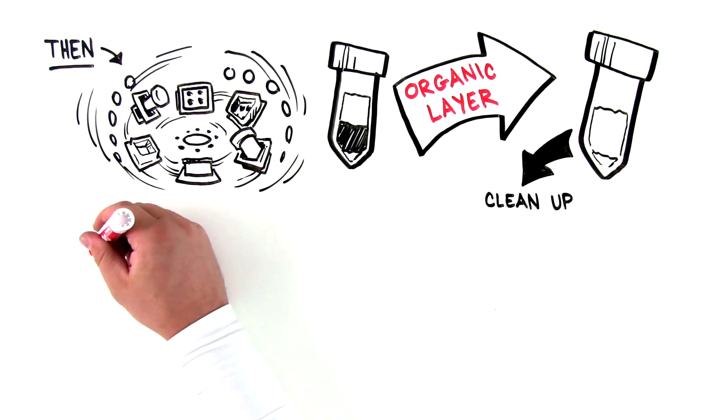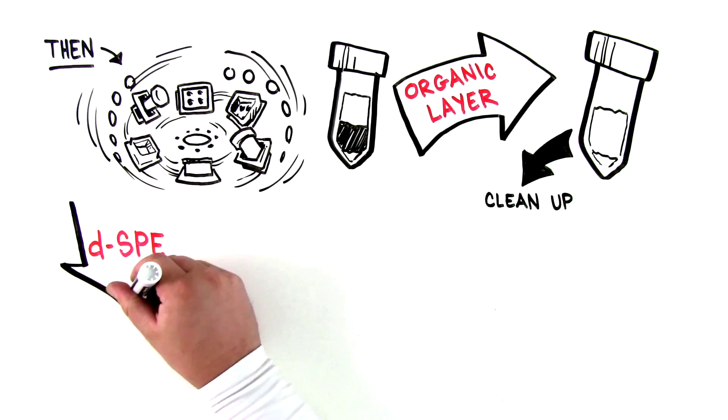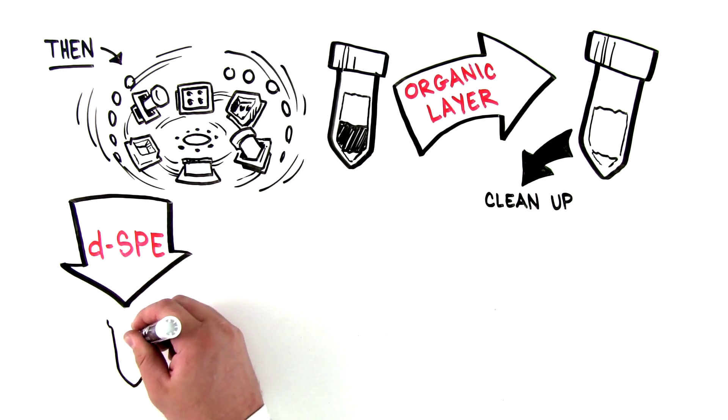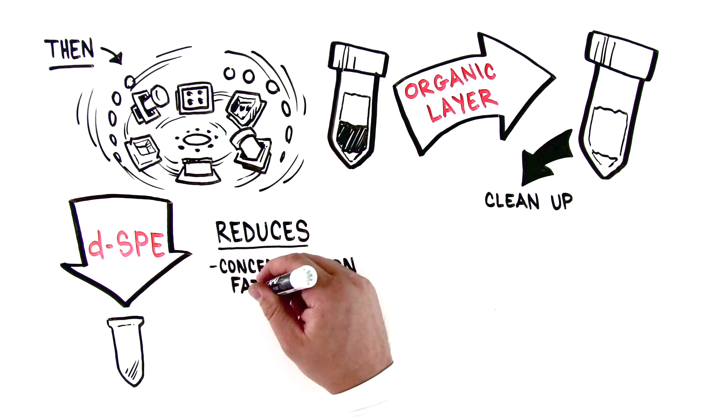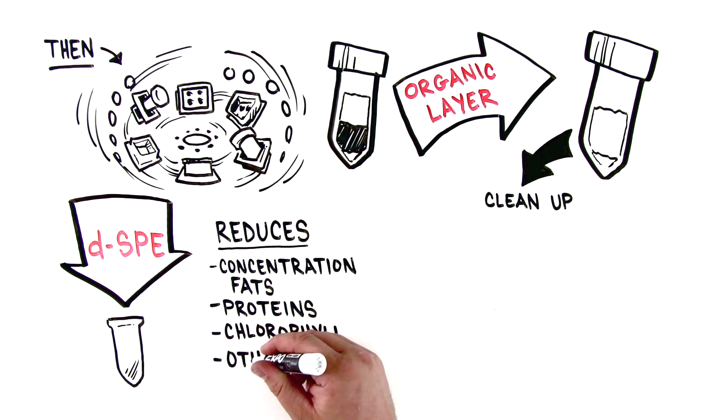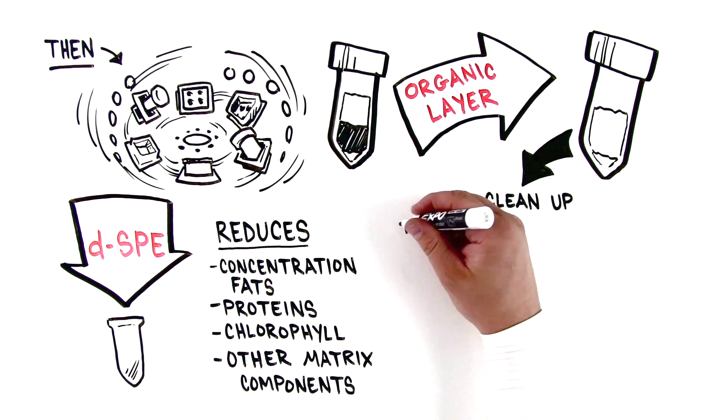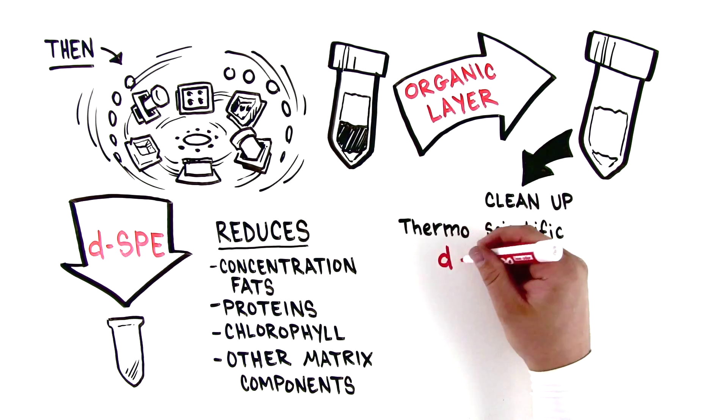Cleanup. In this final step of the QuEChERS workflow, add dSPE, or dispersive SPE, to the tube containing the organic extract. The dSPE step reduces the concentration of fats, proteins, chlorophyll, and other undesired matrix components. You can use Thermo Scientific dispersive SPE for this step.